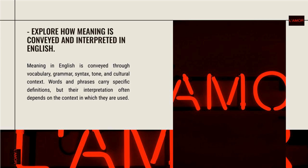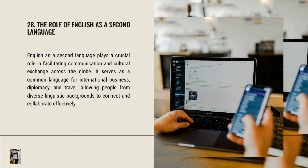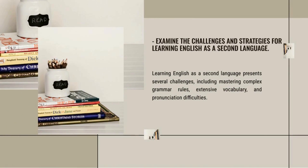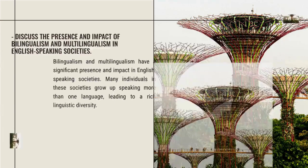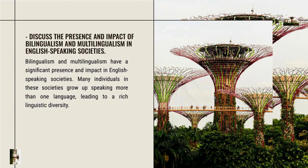English as a second language plays a crucial role in facilitating communication and cultural exchange across the globe, serving as a common language for international business, diplomacy, and travel. Learning English as a second language presents several challenges, including mastering complex grammar rules, extensive vocabulary, and pronunciation difficulties. Bilingualism and multilingualism are prevalent in English-speaking countries, with many individuals being fluent in more than one language, leading to a rich linguistic diversity.